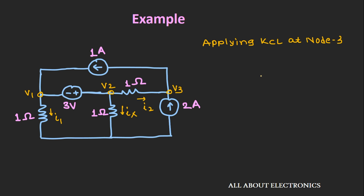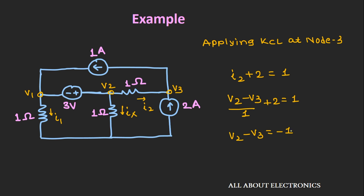Now applying KCL at node 3, we can write I2 plus 2A equals 1, where I2 is V2 minus V3 divided by 1 ohm. Simplifying, we get V2 minus V3 is equal to minus 1 — equation number 3.